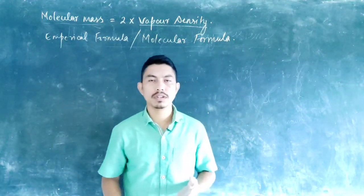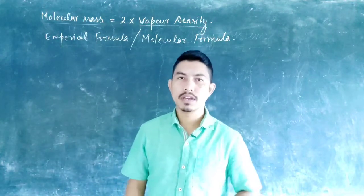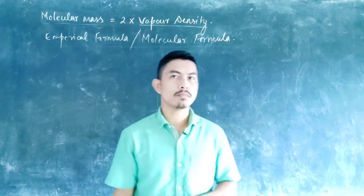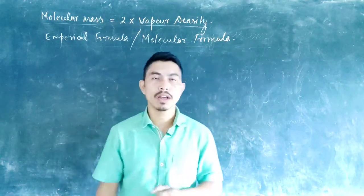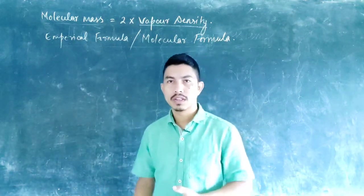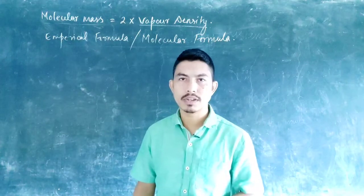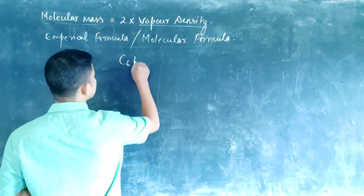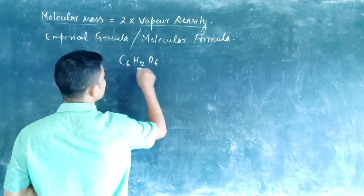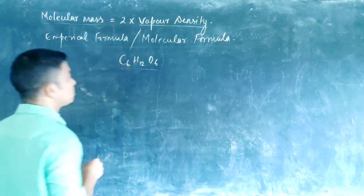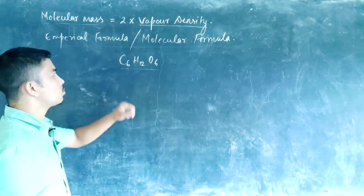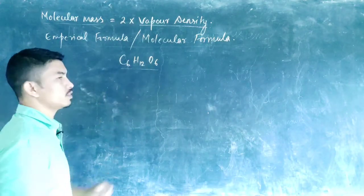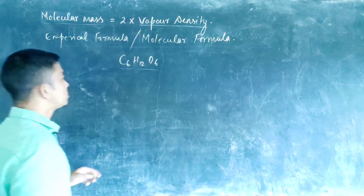The empirical formula simply gives us the simplest ratios of the number of atoms present in a given compound, whereas the molecular formula tells us how many atoms are actually present in a given compound. For example, if you take glucose, C6H12O6 — this is the molecular formula of glucose, which tells us that in one molecule we have six carbon, twelve hydrogen, and six oxygen atoms.